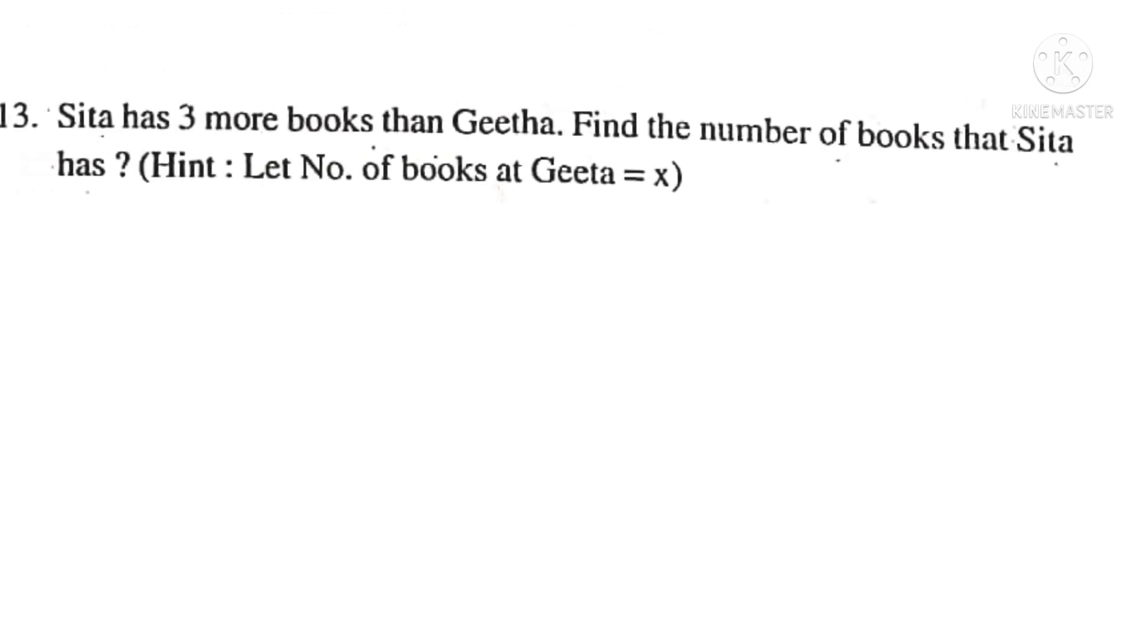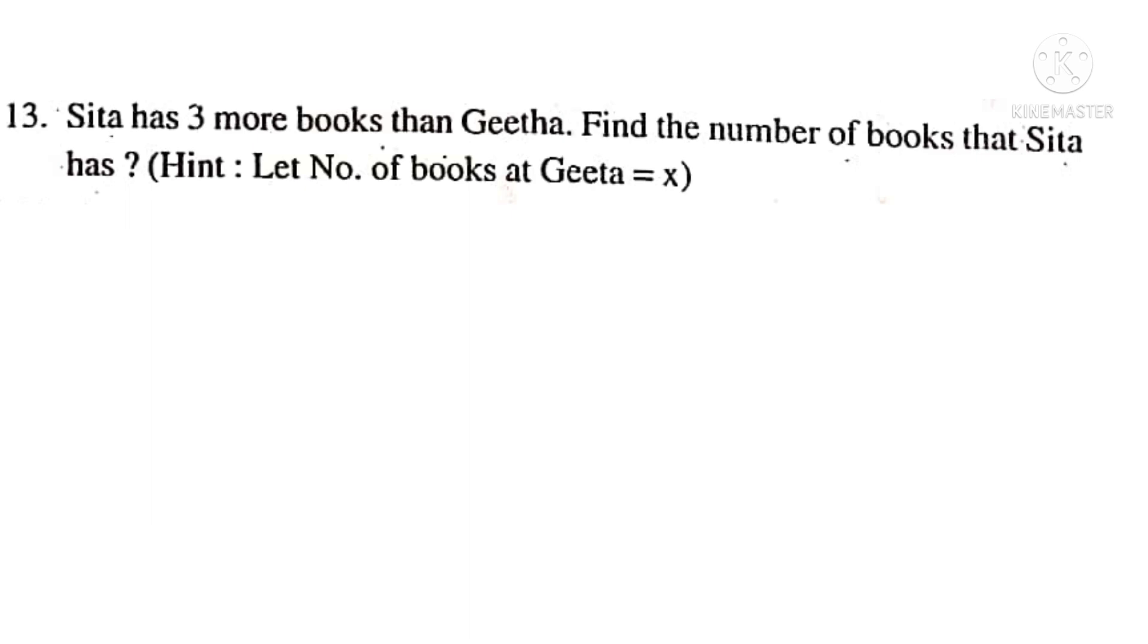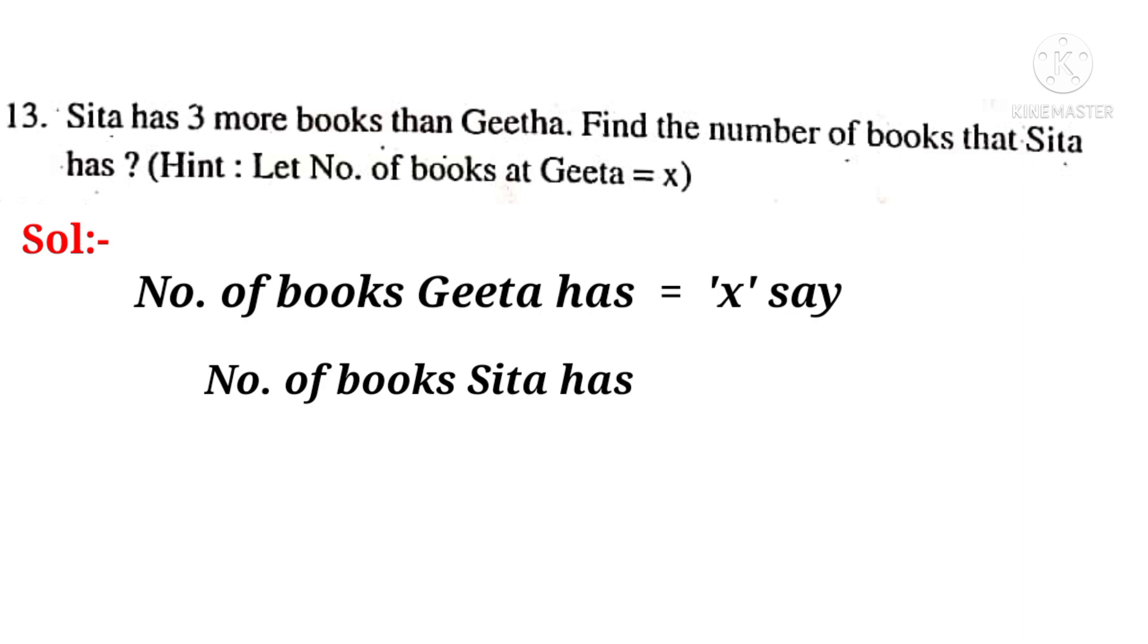Now let us answer 13th question. Sita has 3 more books than Gita. Find the number of books that Sita has. Solution. Number of books Gita has is equal to X say. Number of books Sita has is equal to. Observe the number 3, so write 3. And then observe the word more, it indicates the operation plus, so write plus. Observe the word than Gita. Gita has X books, so write X. So number of books Sita has is equal to X plus 3.